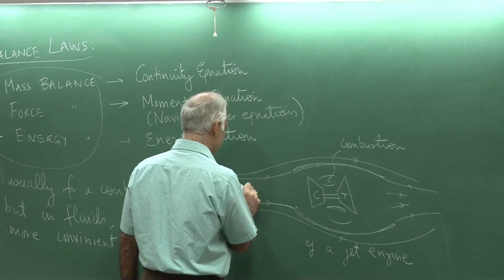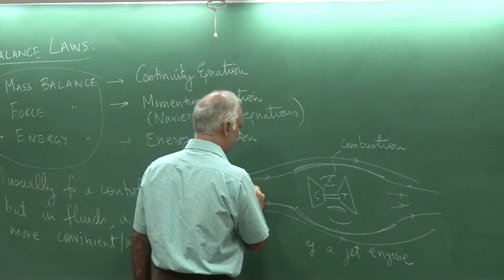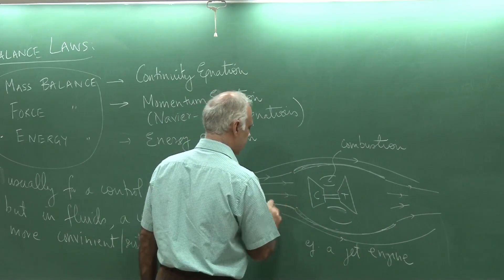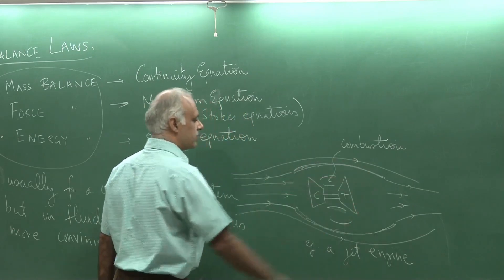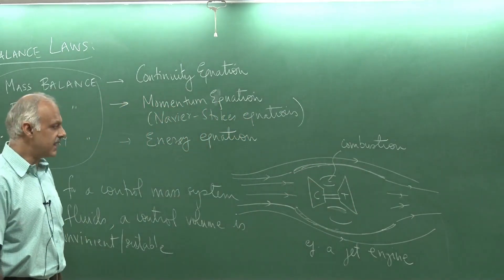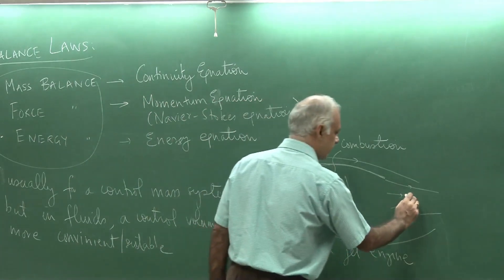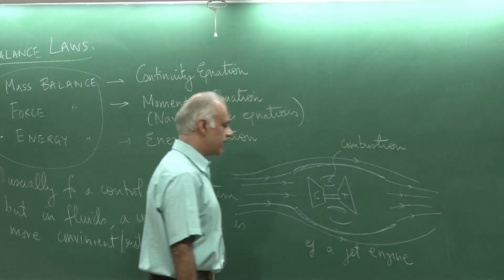We now know what streamlines are. They could go through some very complicated motions inside, so I am not showing that. But roughly speaking, this is the flow that I could have.